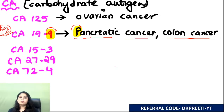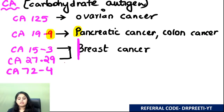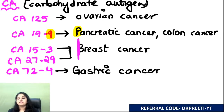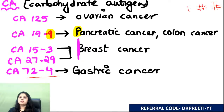CA 15-3: take the '3' and make a 'B' — that's breast cancer. Both CA 15-3 and CA 27-29 are markers for breast cancer. CA 72-4 is for gastric cancer. These CA markers generate the most exam questions.